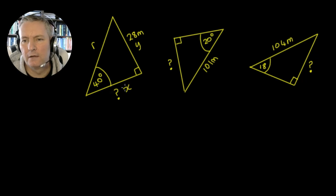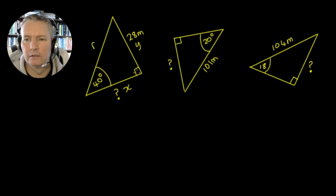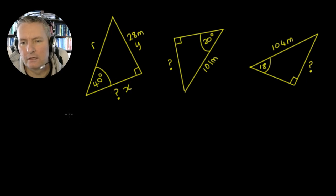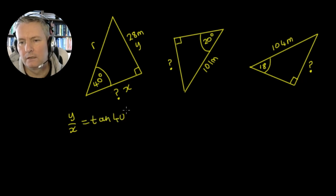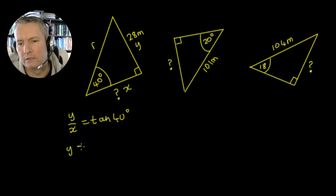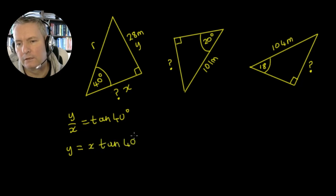If we're wanting to find this distance x, we know that we can use the tangent. We know that y divided by x is going to be the tan of 40 degrees. So we can say y upon x equals the tan of 40 degrees, which means y is going to equal x tan 40 degrees.